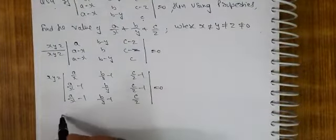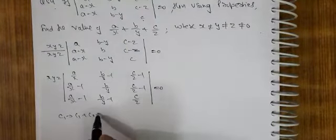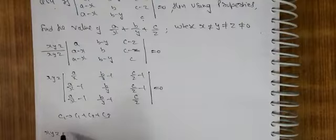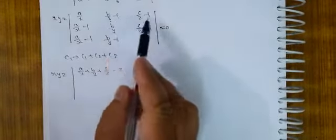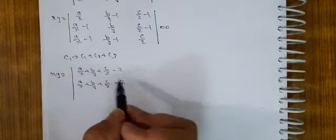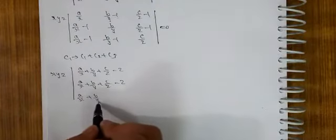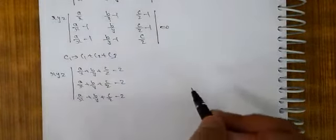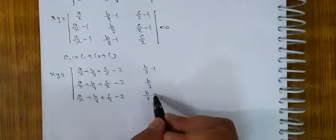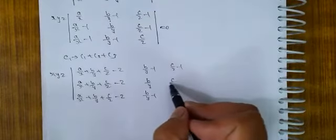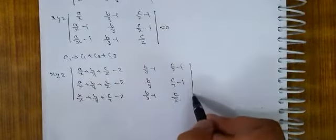अब हम क्या करते हैं, C1 में change करते हैं, C1 plus C2 plus C3। यह XYZ ऐसी रहेगा, तीनों column करते हैं। देखो: A upon X, B upon Y, C upon Z — पहले column में आएगा A upon X plus B upon Y plus C upon Z minus 2, B upon Y minus 1, B upon Y, B upon Y minus 1, C upon Z minus 1, is equal to 0.